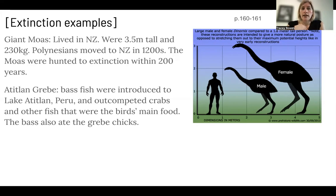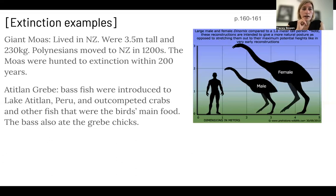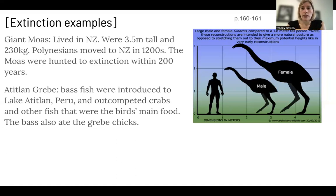The Atitlan grebe is a small bird that lives near Lake Atitlan, on the border between Peru and Bolivia. Bass fish were introduced to Lake Atitlan, and they outcompeted the crabs and the other fish that were the bird's main food. Lake Atitlan is the highest elevation lake in the world. The bass fish also ate the grebe chicks, and bass fish were introduced to promote tourism and tourist fishing.